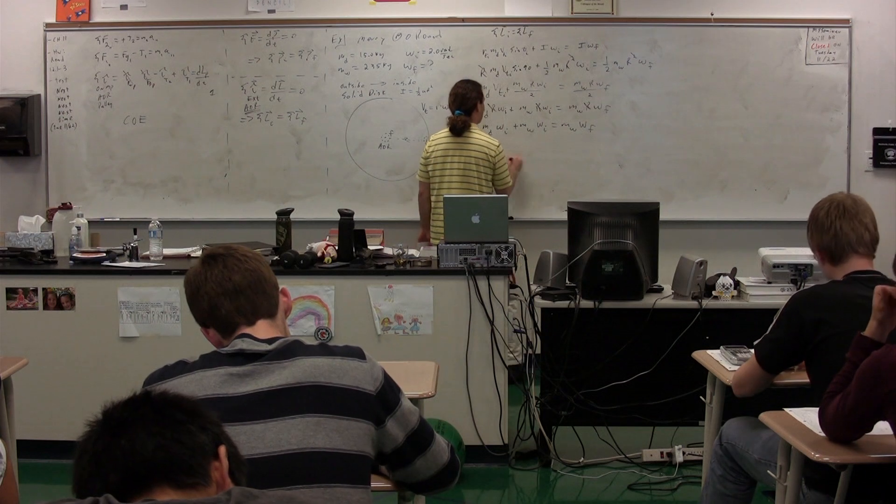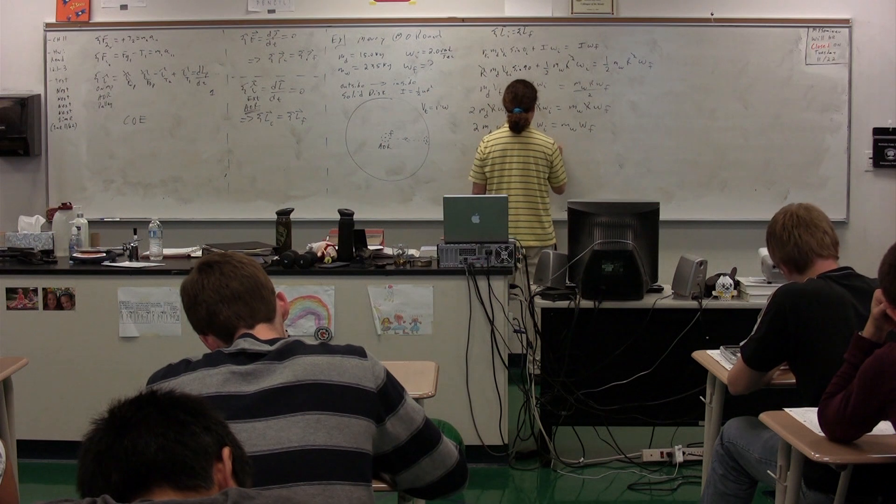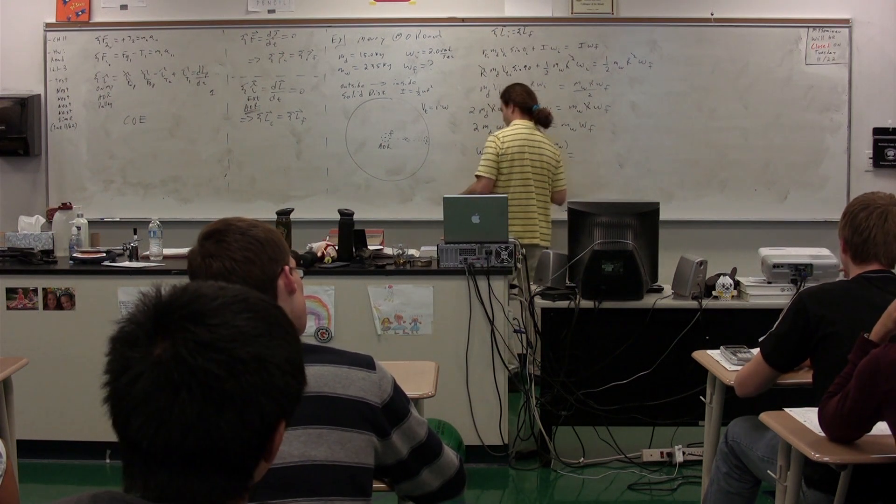Therefore, the angular velocity final equals ω initial times 2 times the mass of my daughter plus the mass of the wheel divided by the mass of the wheel.